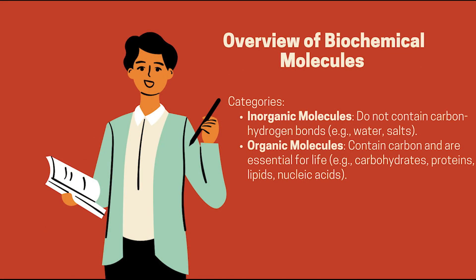Let's begin with the big picture. Biochemical molecules fall into two main categories: inorganic and organic. Inorganic molecules are simpler and they usually do not contain carbon-hydrogen bonds. Examples include water, salts, and certain ions like sodium and potassium. Organic compounds, on the other hand, are carbon-based and more complex. These include carbohydrates, lipids, proteins, and nucleic acids — all vital for life. Understanding this classification helps us organize and analyze the chemical substances found in all living organisms.